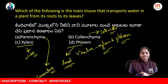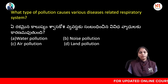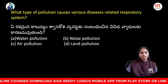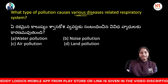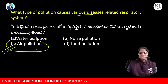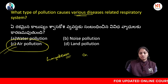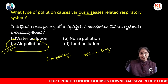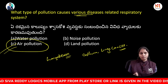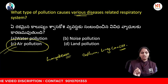Which pollution is related to the respiratory system? That is air pollution. Long-term ambient air pollution exposure causes major respiratory diseases, especially asthma, lung cancer, and pulmonary diseases. These are the major respiratory diseases caused due to air pollution exposure.